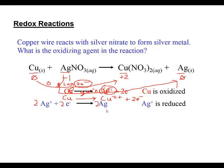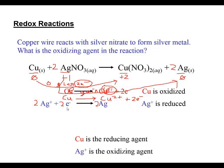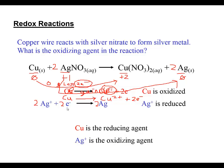Now I have two silver cations producing two silver atoms. To balance this reaction, I need a coefficient of two for the silver. I just had to look at the ratio of electrons transferred and change the coefficients accordingly. Since copper is being oxidized, it's the reducing agent. Since silver is being reduced, it's the oxidizing agent - it's causing the copper to oxidize.